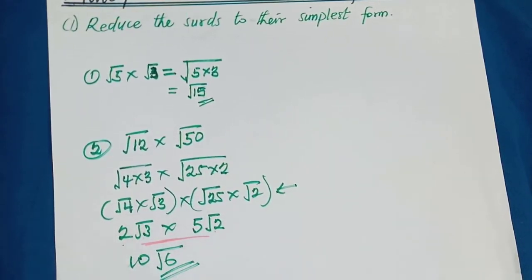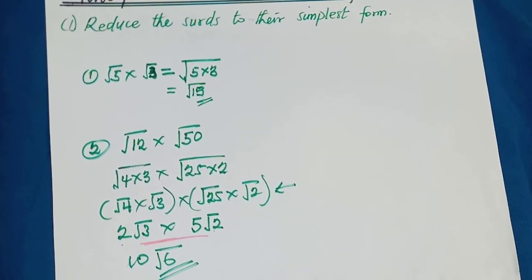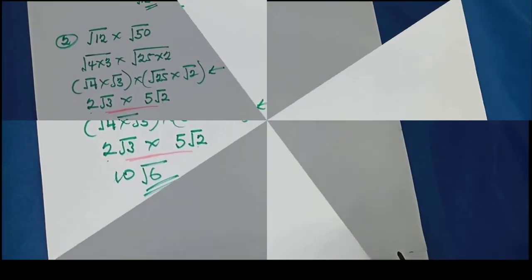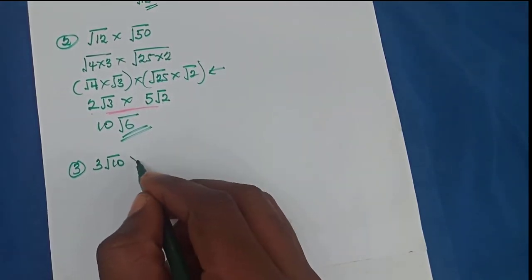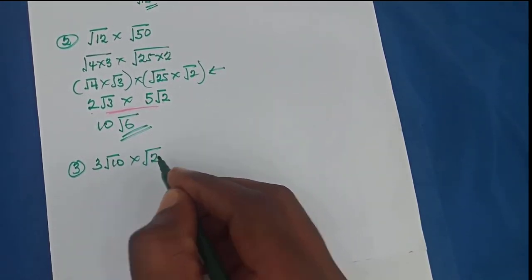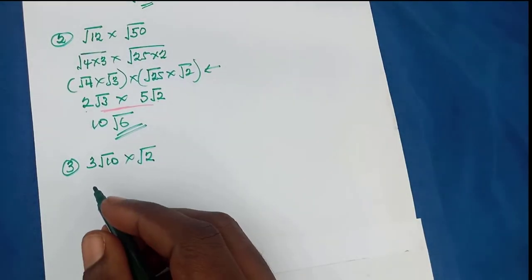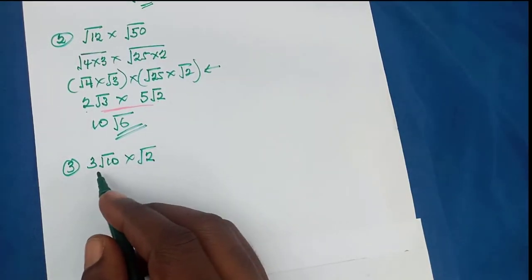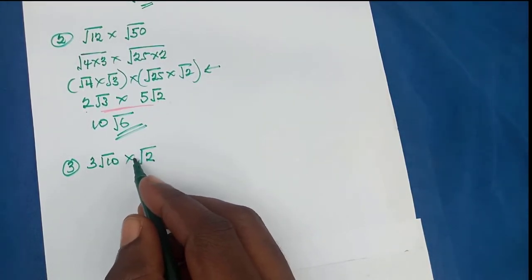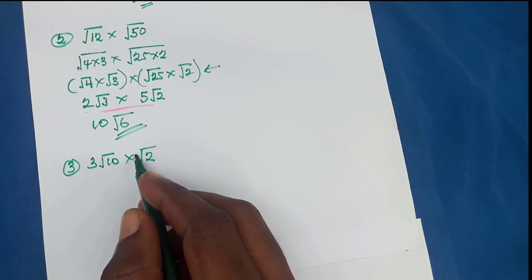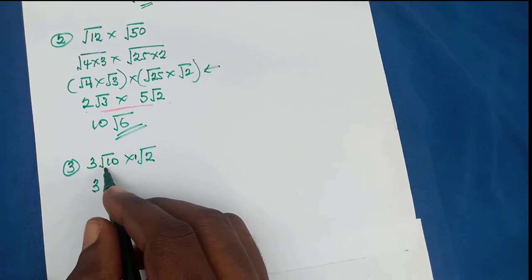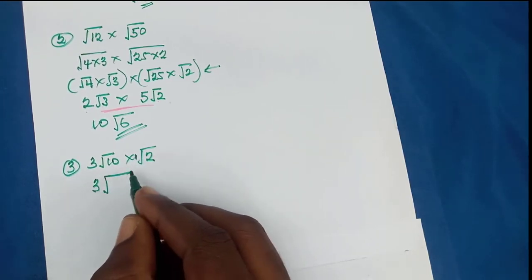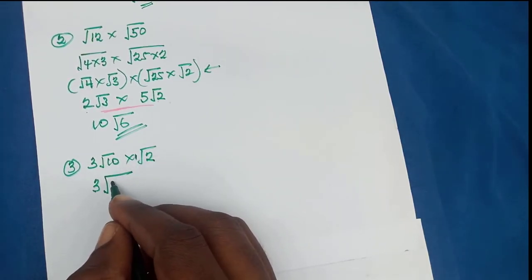Let's look at the third example: 3 root 10 times root 2. The rational part multiplies the rational part — there's a hidden 1 in front of root 2 — so 3 times 1 gives 3. Then root 10 times root 2: the radicands multiply, so 10 times 2 gives 20.